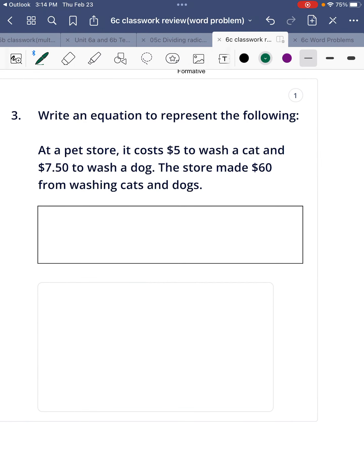Alright, let's look at number three. So now we don't have a one-time fee anywhere. We have a pet store, costs $5 to wash a cat and $7.50 to wash a dog. Those are our two things, two different things. This would be two different items.